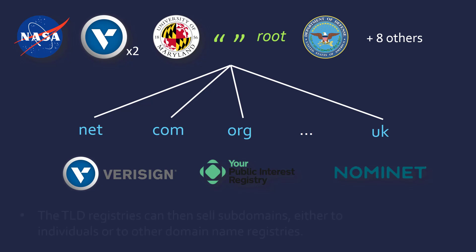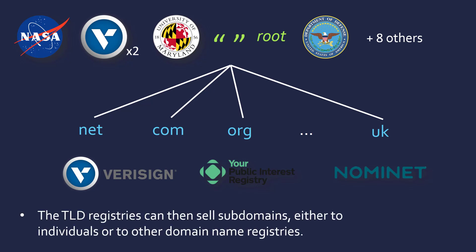Just because these registries operate the domain name servers for each subdomain doesn't mean they're actually selling the subdomains. They might sell a set amount to other domain name registries like GoDaddy, which doesn't actually operate any DNS servers — GoDaddy buys a set amount of domain names from VeriSign or Nominet and then passes them on to customers. It's all about passing things on while ensuring they're kept consistent by being operated by a trusted company.